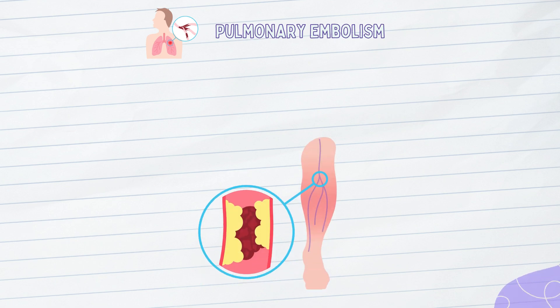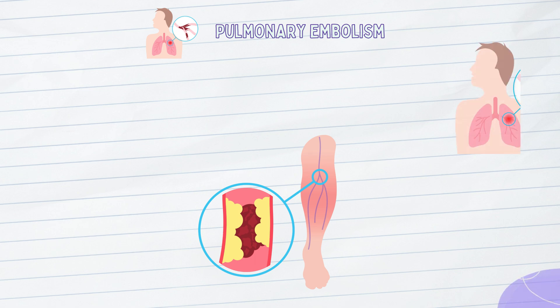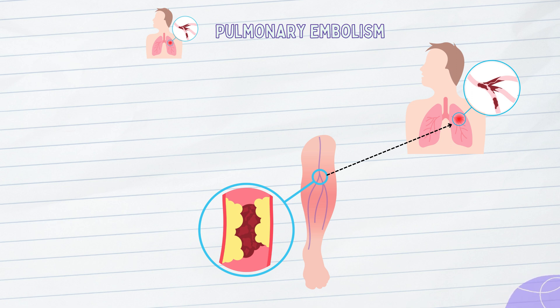Pulmonary embolism occurs when a blood clot, often formed in the deep veins of the legs, travels to the lungs and blocks a pulmonary artery. This obstruction can disrupt blood flow, leading to potentially life-threatening consequences.